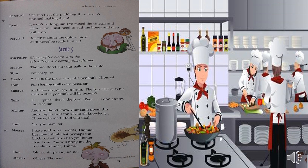Scene 5. Narrator: Eleven of the clock, and the schoolboys are having their dinner. Master: Thomas, don't cut your nails at the table. Tom: I am sorry, sir. Master: What is the proper use of a penknife, Thomas? Tom: For shaping quills into pens, sir. Master: And how do you say in Latin: 'The boy who cuts his nails with a penknife will be beaten'? Tom: That's the boy who — I don't know the rest, sir. Master: And you didn't know your Latin poem this morning either.